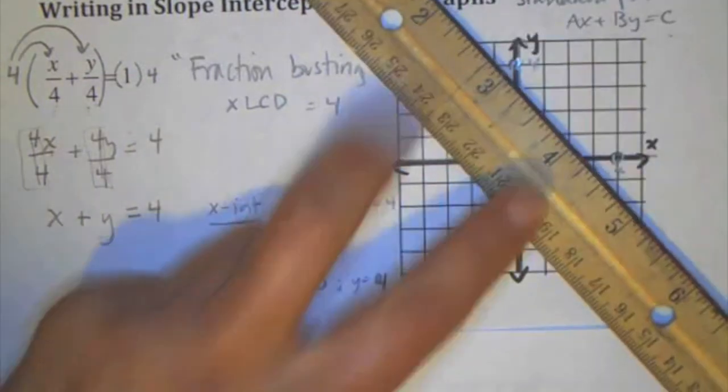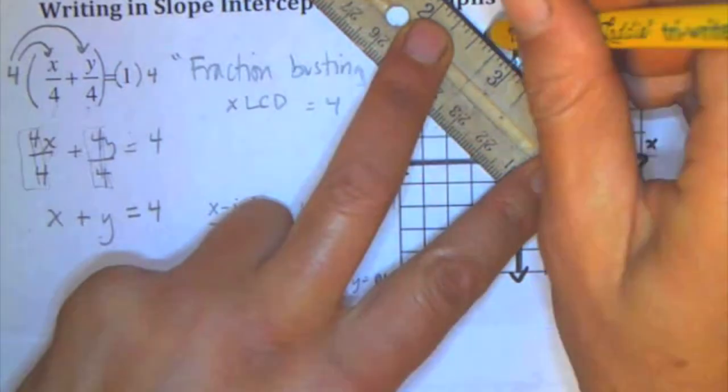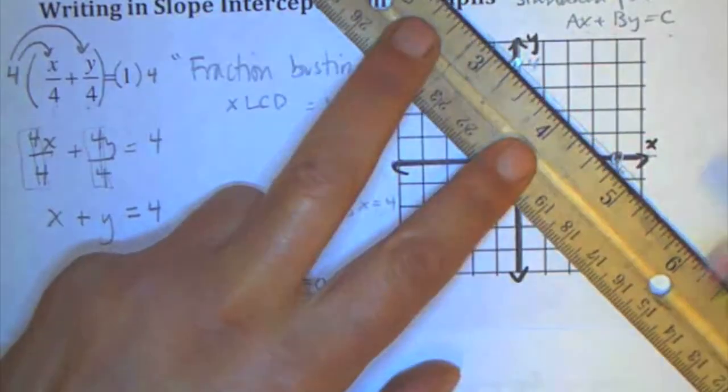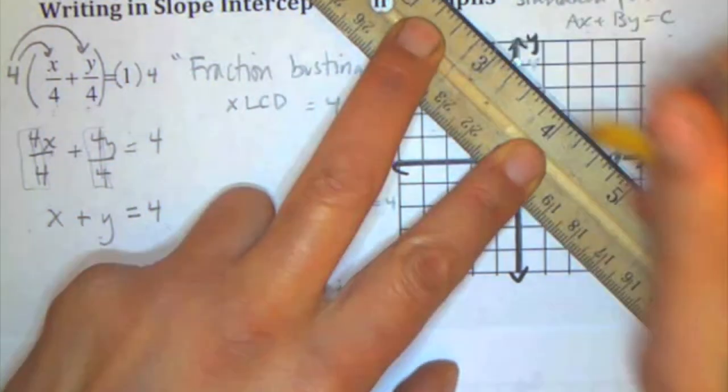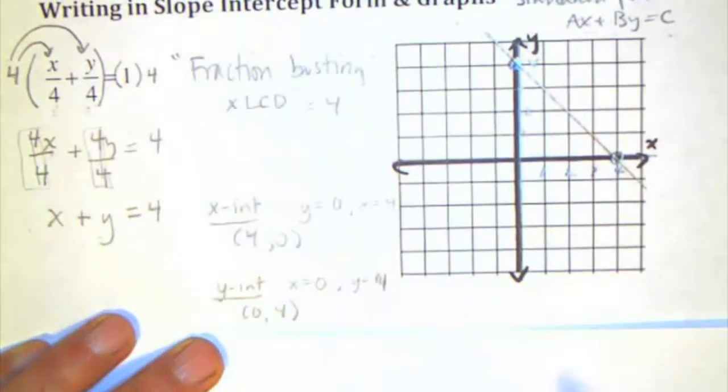Once again, you can see two points is enough to make a line, although it's always good to do three just to make sure you haven't made any mistakes. I'm going to do it a little darker. Okay, so that's my line.